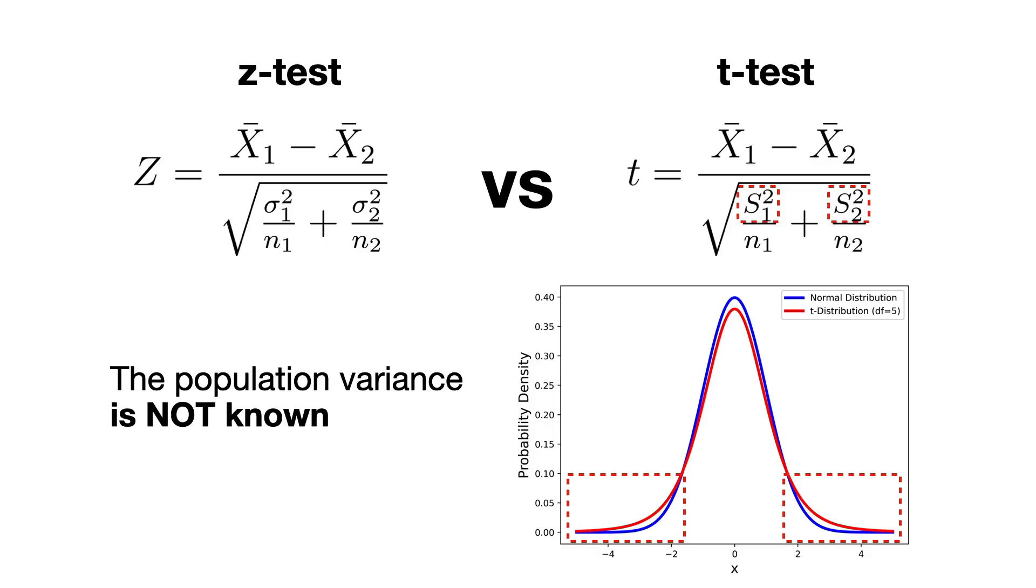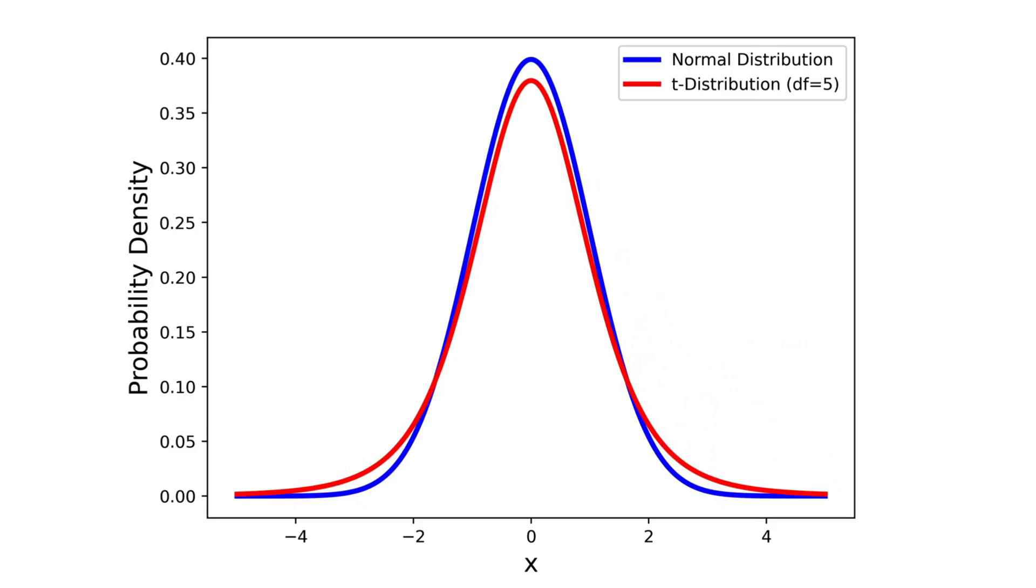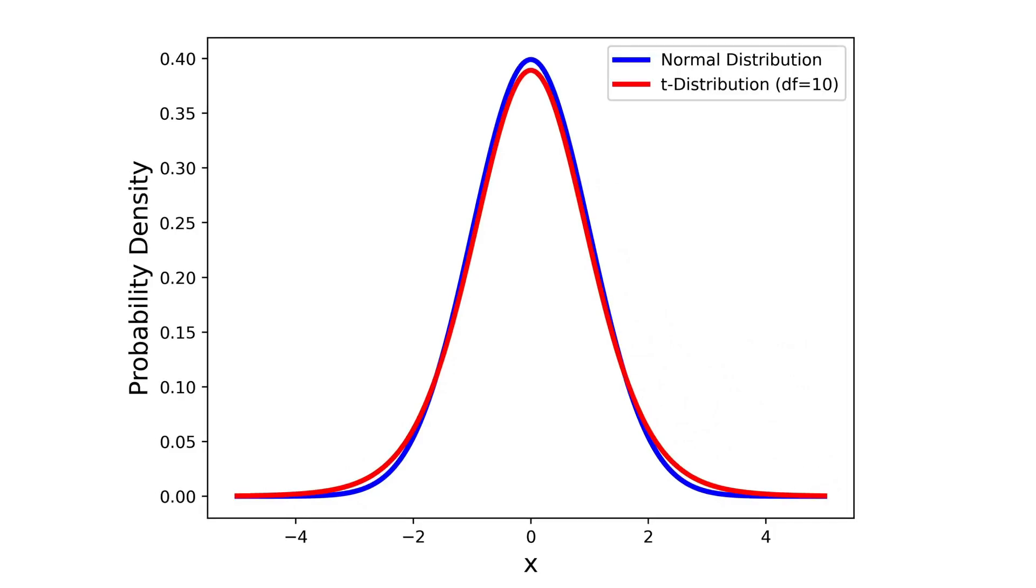The T-distribution has fatter tails compared to the normal distribution, and that helps to account for the increased variability, especially with smaller samples. As your sample size grows, the thicker tails start to thin out, and eventually, the T-distribution looks very similar to the normal distribution, making the T-test behave more like a Z-test.